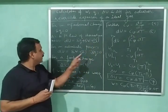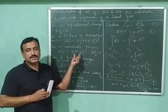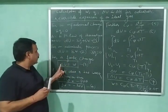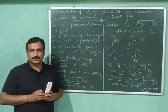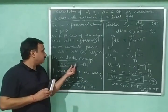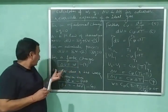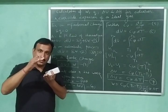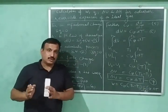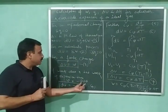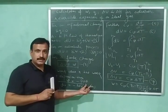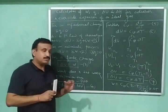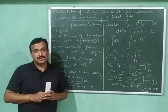Equation number one can be written as dU is equal to delta w, but this is for very small changes. For a finite change, equation number two becomes delta U is equal to w, meaning the change in internal energy equals the work done. If the work is the work of expansion, then w equals minus p dV as discussed earlier, so dU equals minus p dV — let this be equation number four.